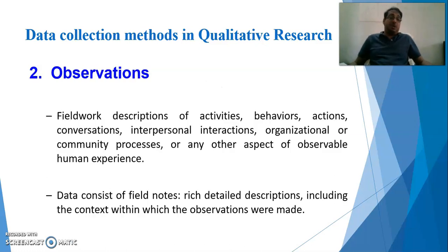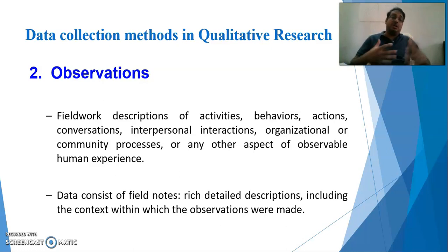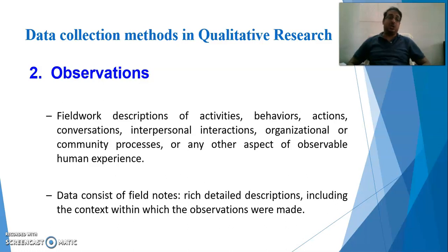The second method of collecting qualitative data is observation — field description of activities, behaviors, actions, conversations, interpersonal interactions, organizational or community processes, or any other aspect of observable human experience. You can observe the participants' activities, behavior, action, conversation, how they talk, and how they interact with others.